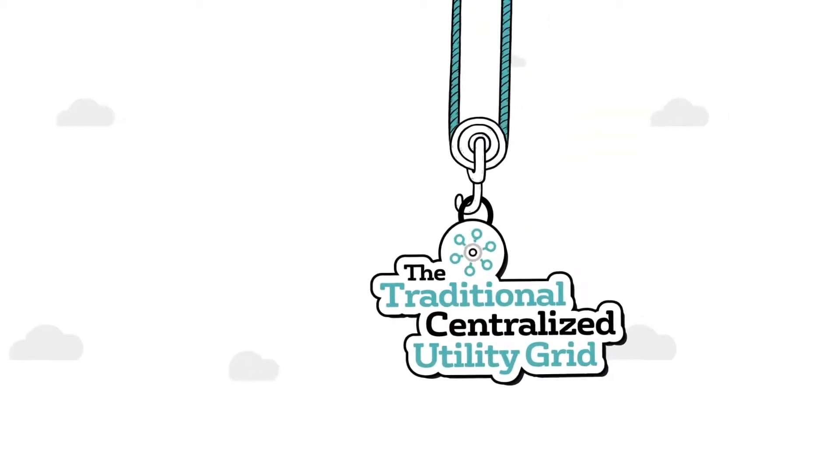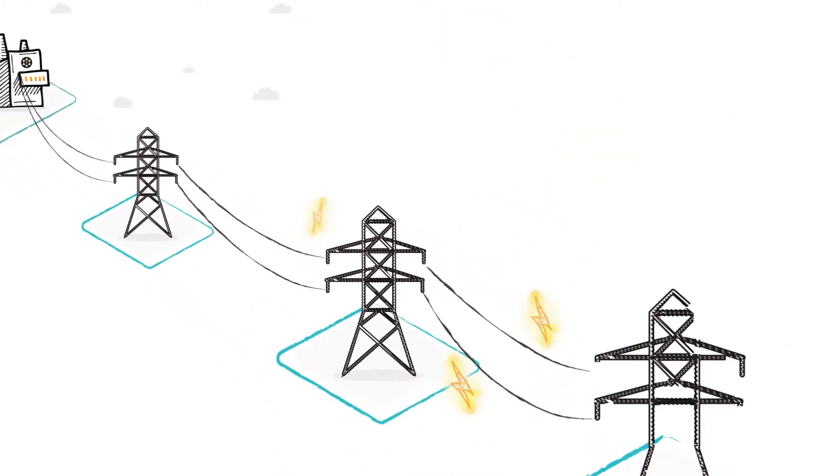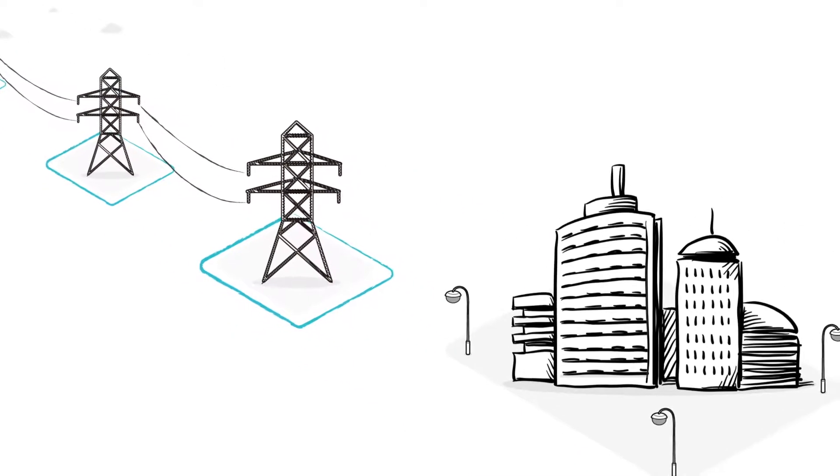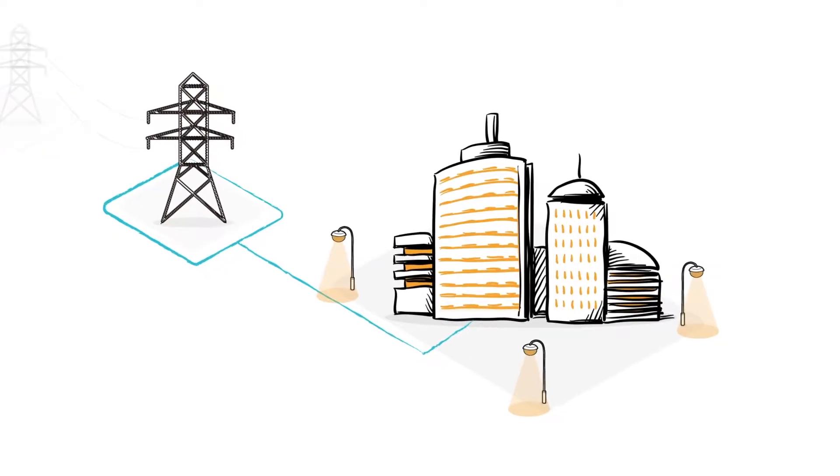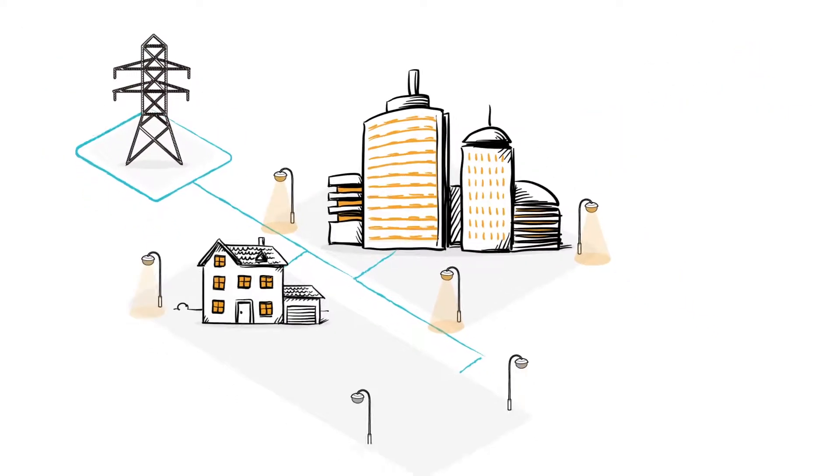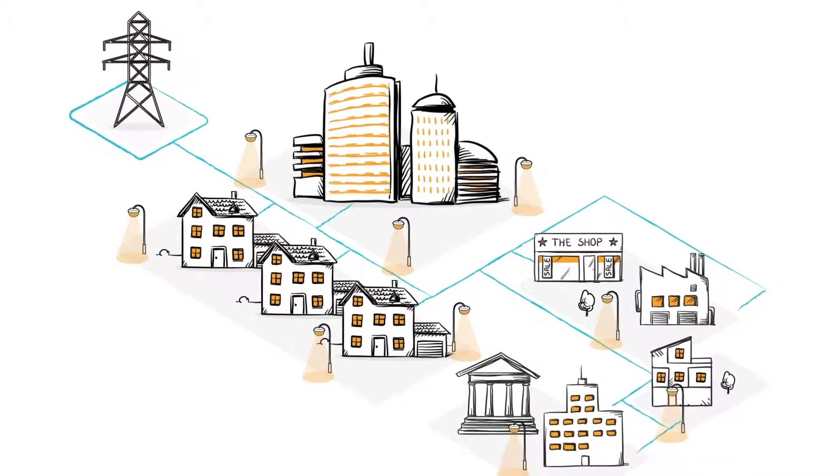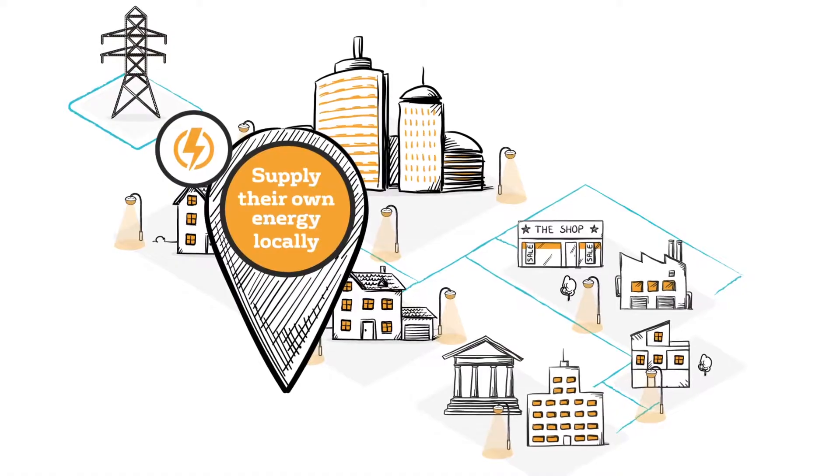The traditional centralized utility grid is a big interconnected network. It takes energy from large, far away energy generation plants and transmits it over long distances to consumers. As technologies and policies continue to evolve, communities and businesses can choose to supply their own energy locally by building their own microgrid.